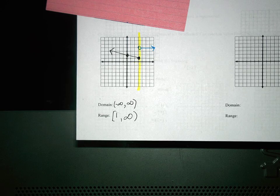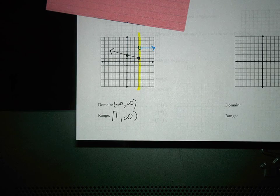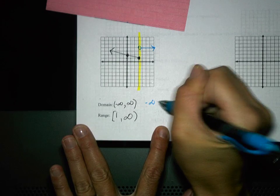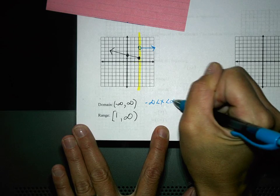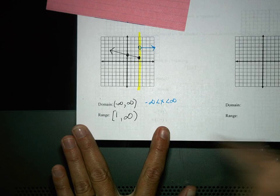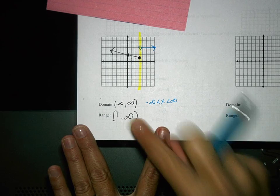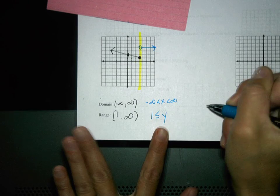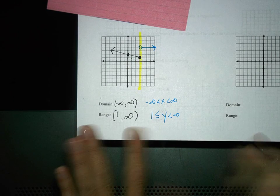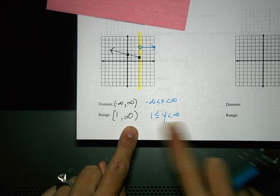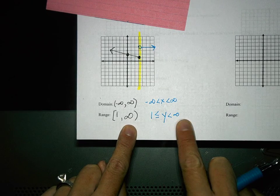In inequality notation, the domain is negative infinity less than x less than positive infinity. Notice there are no equal to signs. For the range: 1 is less than or equal to y is less than infinity. This one has an equal to sign because it did equal 1. We only don't use the equal to sign on infinities or when something is not equal.